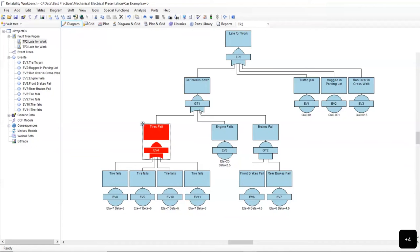And I've got four tires on the car. So it takes any of those four to fail and my tires fail. Engine fails and the brakes fail. And if you noticed on the brakes fail, I've got those front brakes and rear brakes going into an AND gate.